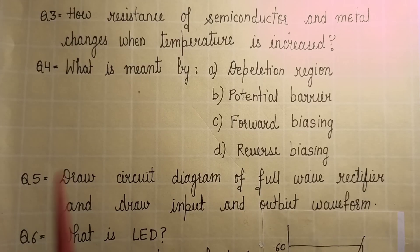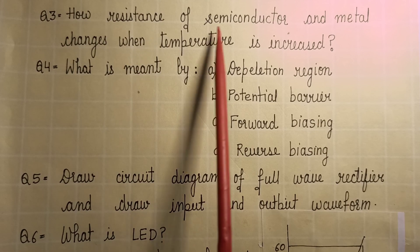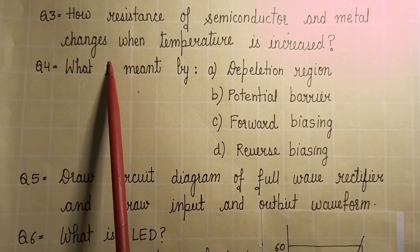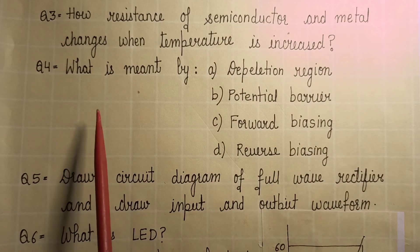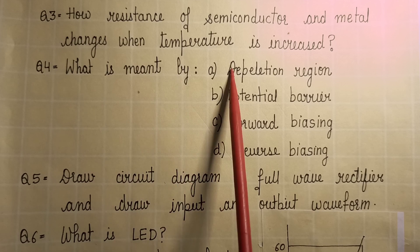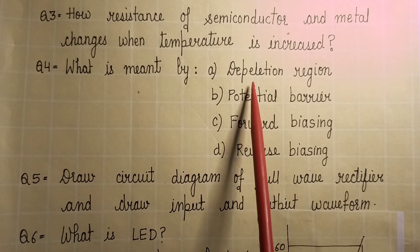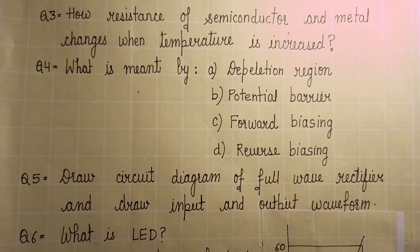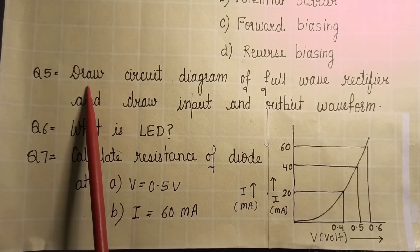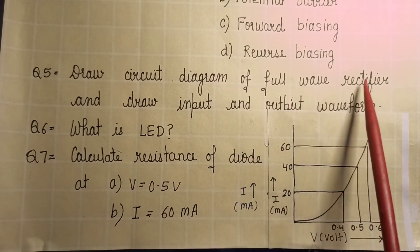Next important question is: how resistance of semiconductor and metal changes when temperature is increased? Then what is meant by these terms: depletion region, potential barrier, forward biasing, reverse biasing? Then draw circuit diagram of full wave rectifier and draw input and output waveform.